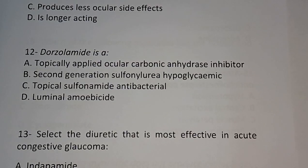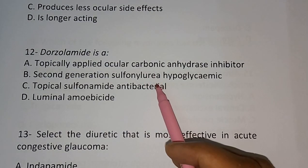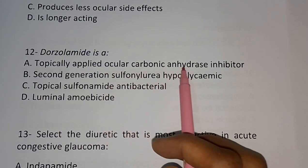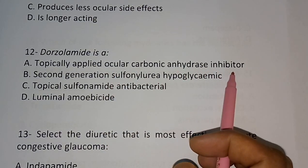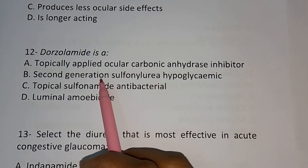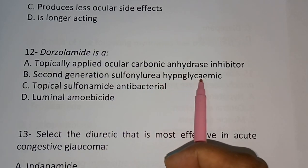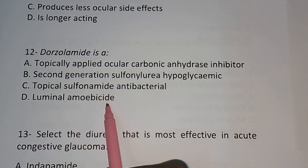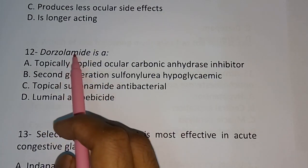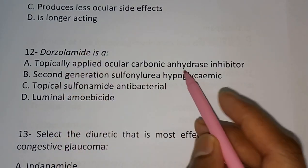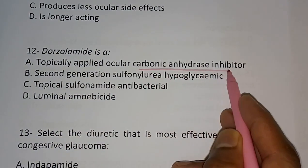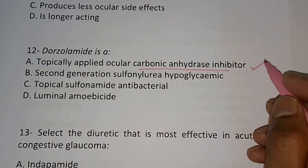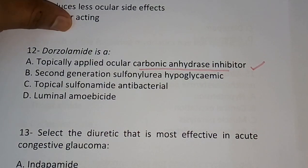Question number twelve: Dorzolamide is a — (A) topically applied ocular carbonic anhydrase inhibitor, (B) second-generation sulfonylurea hypoglycemic, (C) topical sulfonamide antibacterial, (D) luminal amoebicide. Dorzolamide is a carbonic anhydrase inhibitor.